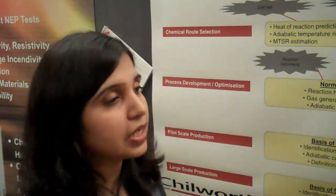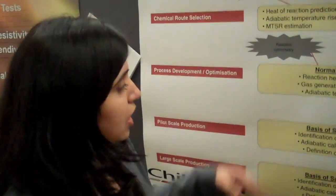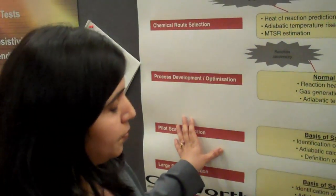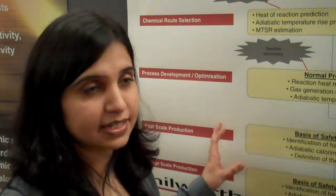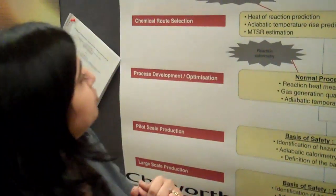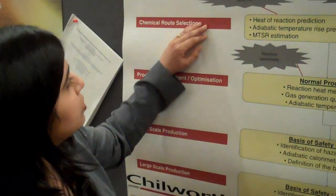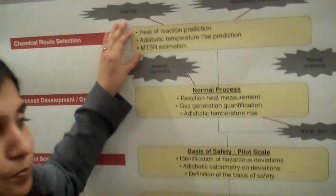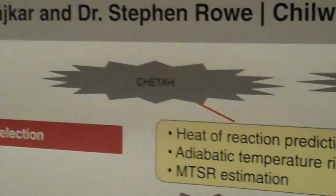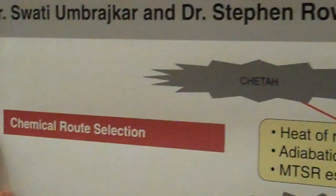Also, if safety testing is conducted way later into the process lifecycle, it may result in a process which has inherent hazards built into it, and we want to avoid that. So we talk about predicting the hazards associated with the material when you're looking at the chemical route selection.